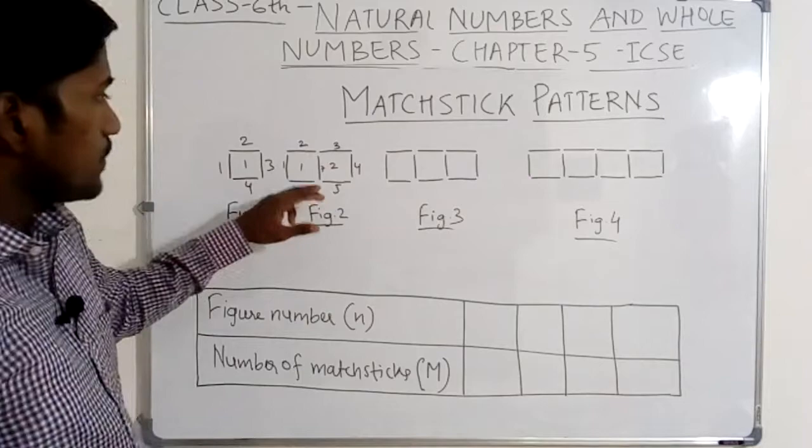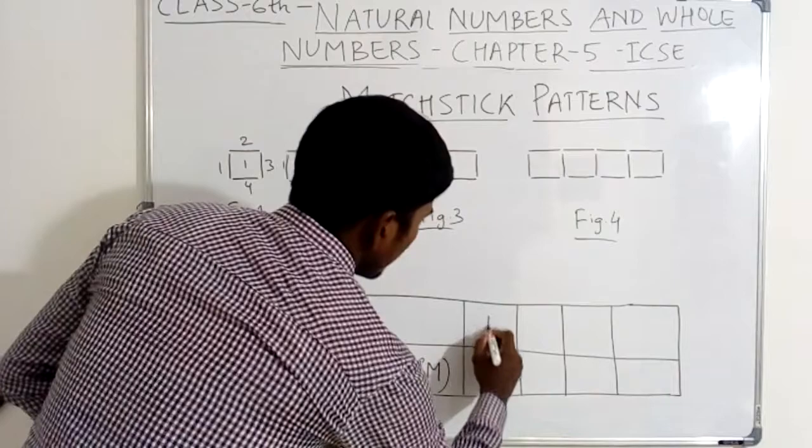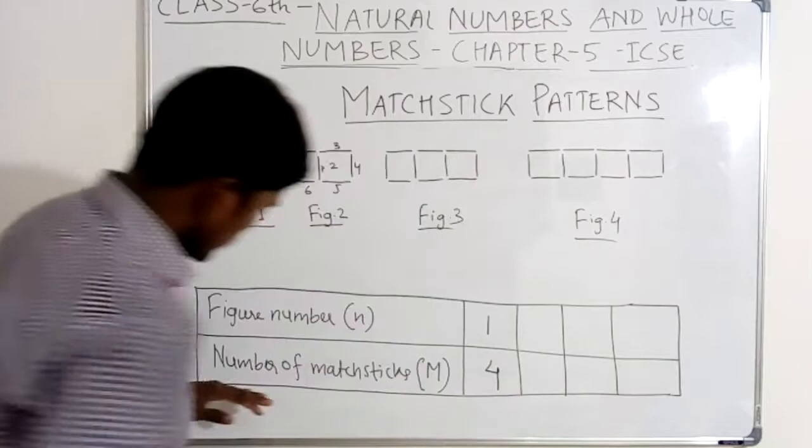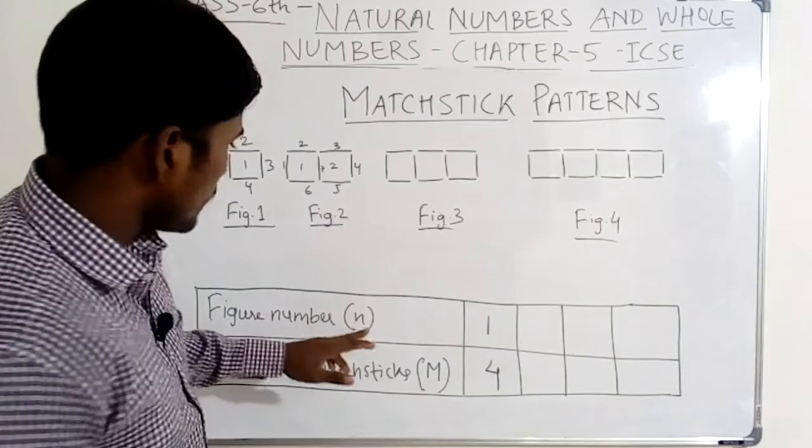So in figure number 1, I will write here: figure number 1, number of mastic used — four. We have taken number of mastic as M and figure number as n. In figure number 1, number of mastic used is four.